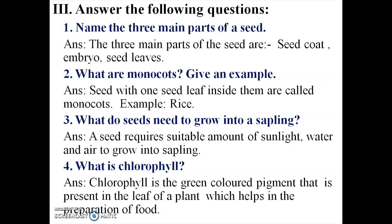Third question: what do seeds need to grow into a sapling? A seed requires a suitable amount of sunlight, water, and air to grow into a sapling.